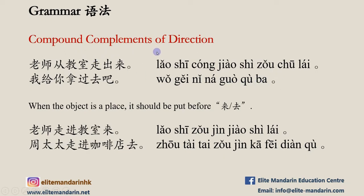Compound complements of direction have different uses in different cases. When the object is a place, it should be put before 来 or 去.